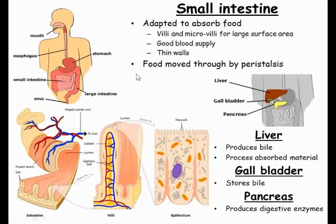Once the food is in a suitable state, it is pushed through into the small intestine. Enzymes from the pancreas and bile that has been stored in the gallbladder after being made in the liver are added here. The bile acts to neutralise the acid from the stomach, which is important so that the new enzymes added from the pancreas can work properly. Bile is also an emulsifier, which makes it easier to break down fats.